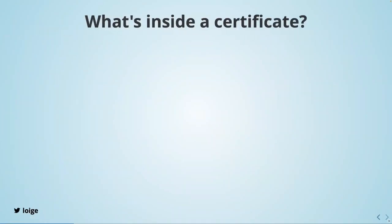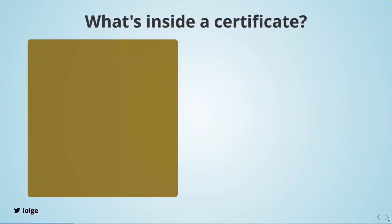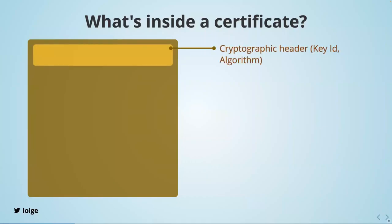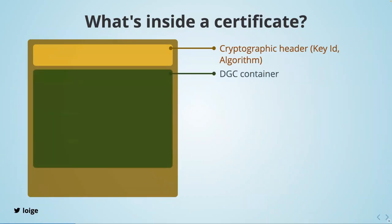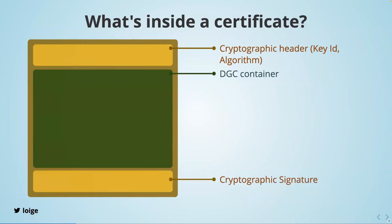What's inside a certificate? There are a number of layers. First, there is a cryptographic header containing a unique ID for the key used to sign the certificate and the particular algorithm used for the cryptographic signature — several algorithm types are supported. Then there is the DGC container, which is where all the interesting data lives. Finally, there is the actual signature itself. So in the header we learn what key and algorithm were used, then there is the entire content, and finally the signature that signs all the content.